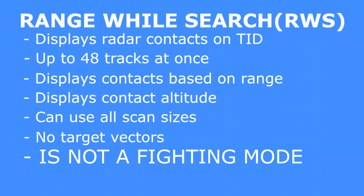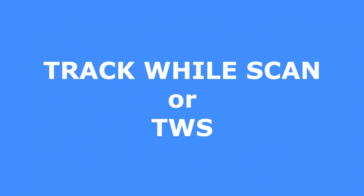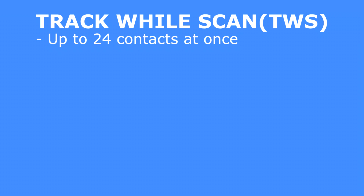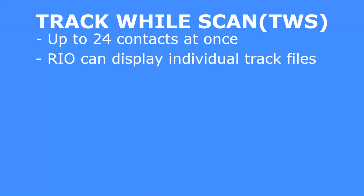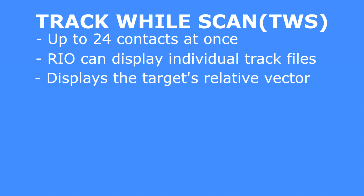It's important to know that the Rio cannot hook up a target on the TID display in RWS to display that target's individual track file. Now let's talk about Track While Scan, or TWS. This will be the primary mode you use to engage targets with AIM-54 Phoenix missiles. This mode operates similarly to Range While Search, however TWS can only track up to 24 concurrent targets at a time. The Rio can hook up a target to display their track file, and most importantly, TWS displays the target's relative vector.